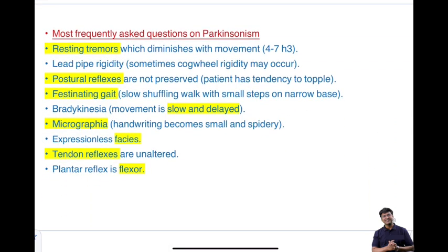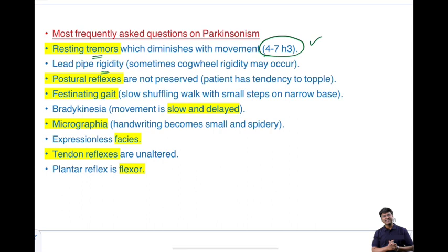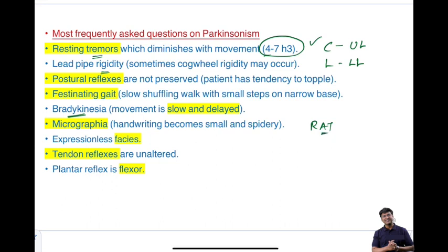Important single-liners for Parkinsonism: the characteristic feature is resting tremors, considered the earliest manifestation, with a frequency of 4–7 Hz. There is cogwheel rigidity in the upper limbs and lead pipe rigidity in the lower limbs, followed by bradykinesia — slowness of movement. The mnemonic RAT covers Rigidity, Akinesia, and Tremors, which is classical for Parkinsonism.